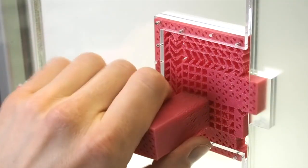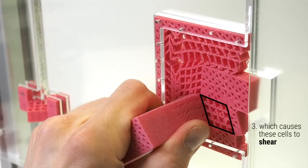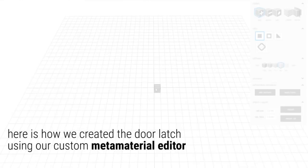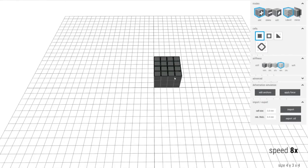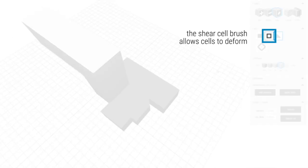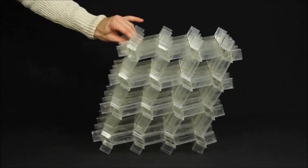Metamaterials, from the Greek word meta, meaning beyond, are composite materials that are engineered to provide material properties that are not otherwise attainable with ordinary materials. These properties are due to structure, and not material composition.